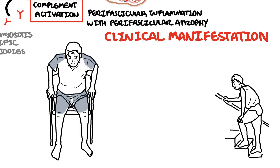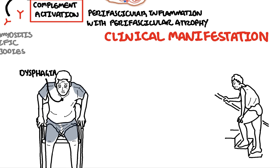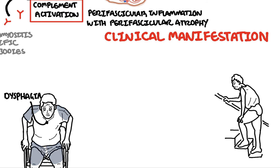Dysphagia, dysphonia, and symptoms of aspiration indicate possible involvement of striated muscle of the pharynx and esophagus, and are typically associated with poor prognosis.